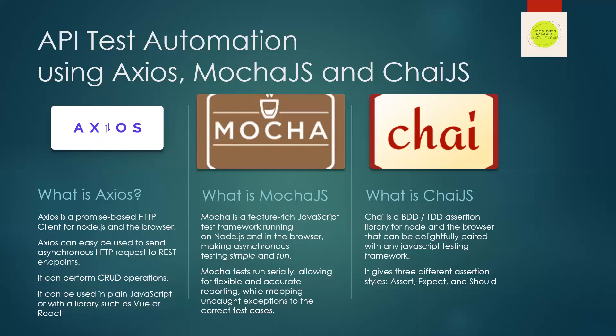What is Chai? Chai is a BDD assertion library for Node and the browser that can be delightfully paired with any JavaScript testing framework. It gives three different assertion styles: Assert, Expect, and Should.